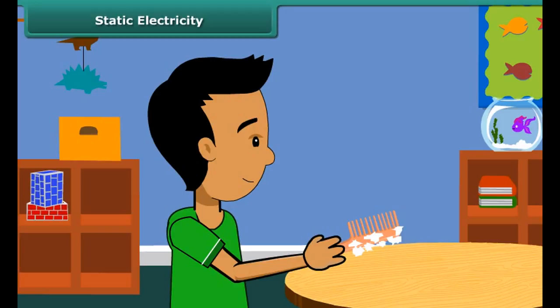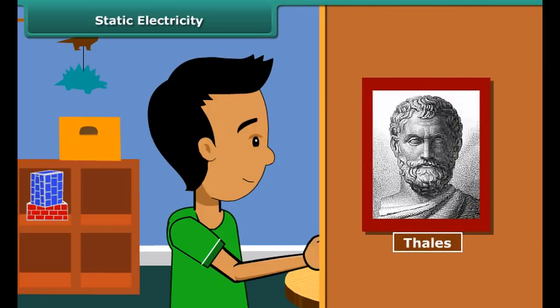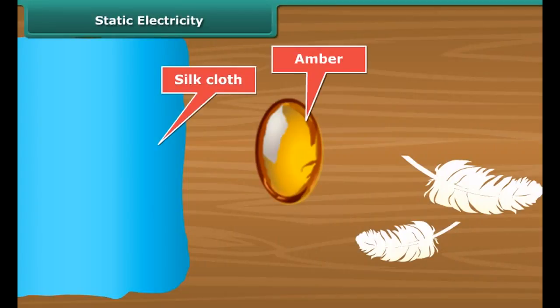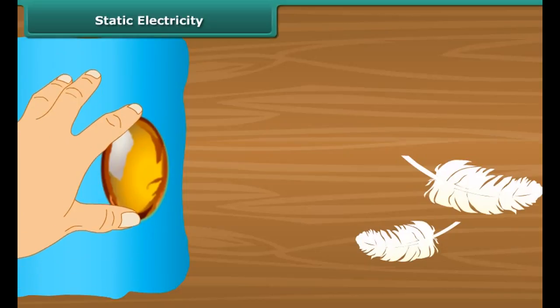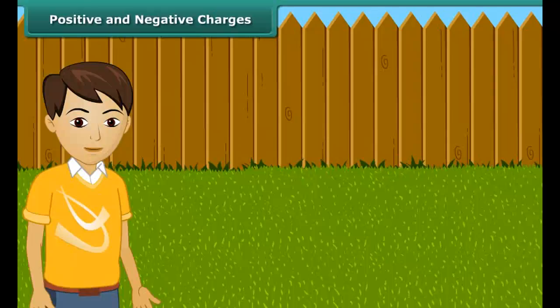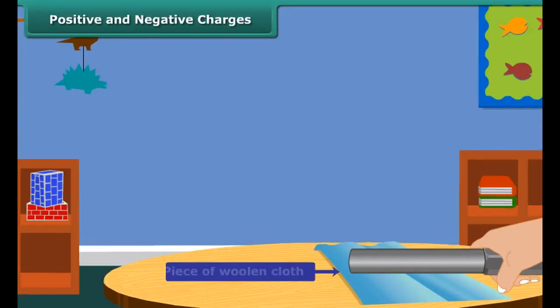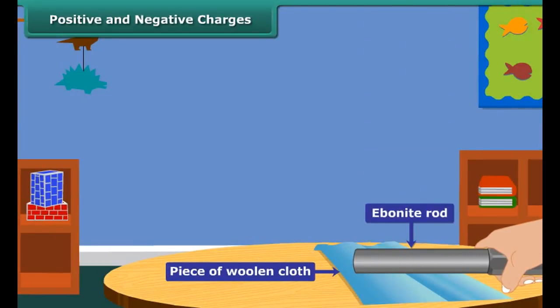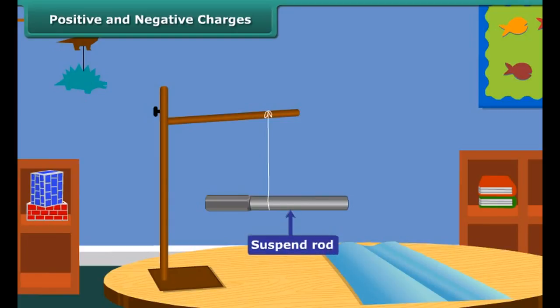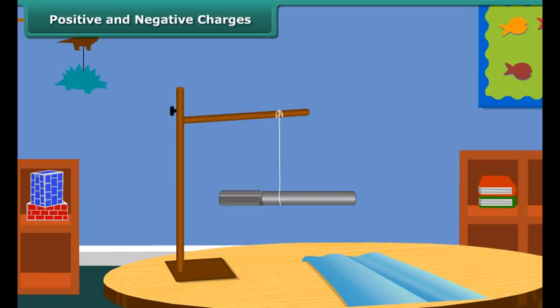When we comb our hair with a plastic comb and bring it near small pieces of paper, the paper pieces are attracted toward the comb. We say the comb is charged with electricity. This was first noticed by a Greek man named Thales over 2,500 years ago. Thales found that amber attracted tiny feathers after it was rubbed with silk cloth — this was due to static electricity. The origin of the word electricity comes from the term electron.